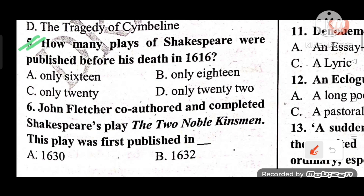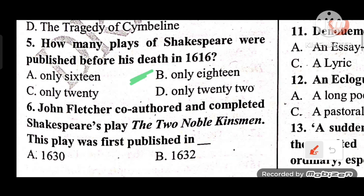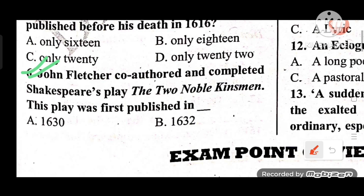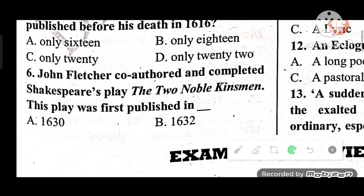Question 5: How many plays of Shakespeare were published before his death in 1616? Options: A) Only 16, B) Only 18, C) Only 20, D) Only 22. The answer is B — only 18 plays were published before Shakespeare's death in 1616. The Two Noble Kinsmen, co-authored with John Fletcher, was published in 1634.